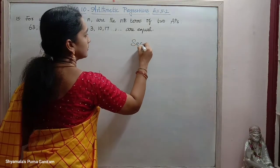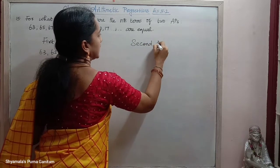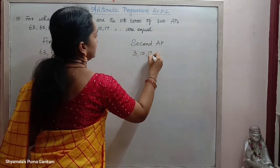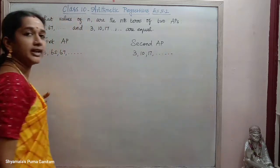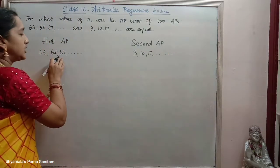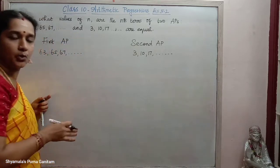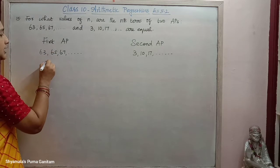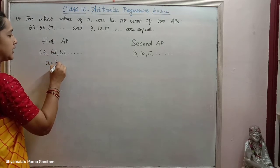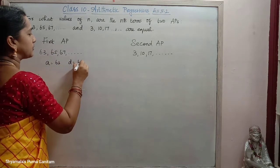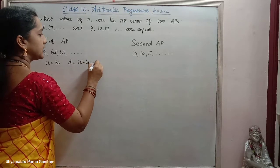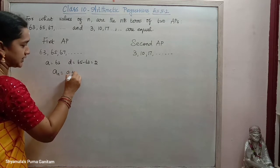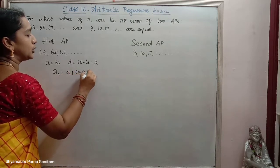The 2nd AP is given as 3, 10, 17, and so on. We need to find the value of N for which both ANs are equal. For the 1st AP, A is equal to 63, D is equal to 65 minus 63, that is equal to 2.